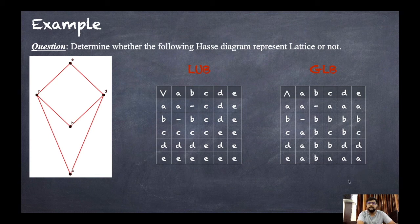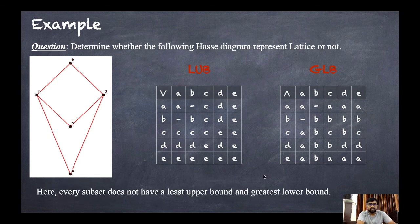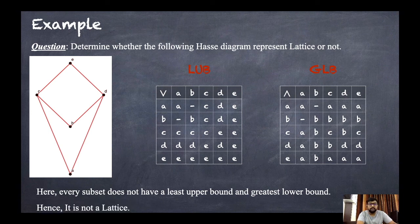Since every subset does not have a least upper bound and a greatest lower bound — we have one pair in the LUB table and one pair in the GLB table without values — this Hasse diagram is also NOT a lattice.